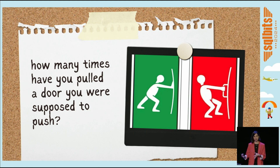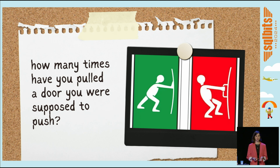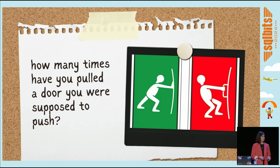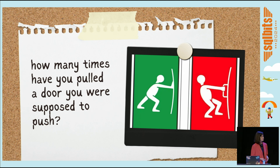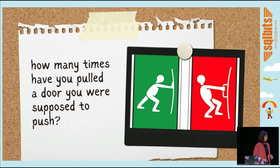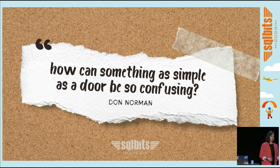To understand UX design in general — not only in the context of Power BI — has it ever happened to you to pull a door that you were supposed to push? This happens a lot to all of us, and it's not your fault. This is a classical example of bad design and is what we call a Norman door, named after design guru Don Norman. How can something as simple as a door be so confusing? You can either open it or close it, and yet we all struggle opening doors.